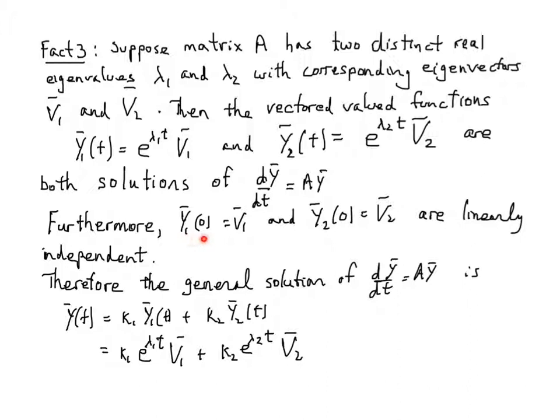Furthermore, at time 0, y1 at time 0 is just, this term is just a 1, we just get v1, and y2 at time 0 is just v2. Distinct eigenvalues have eigenvectors that lie in different directions. v1 and v2 will lie in different directions, they are linearly independent. Therefore,